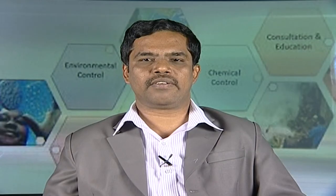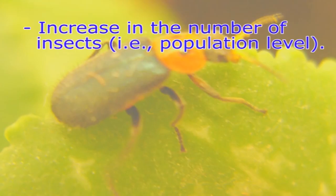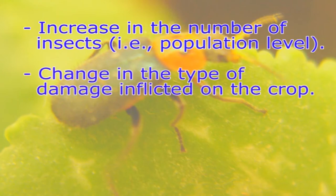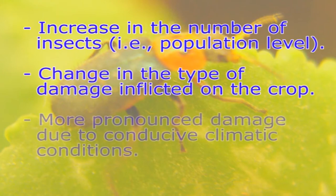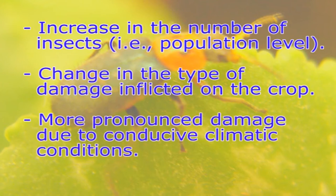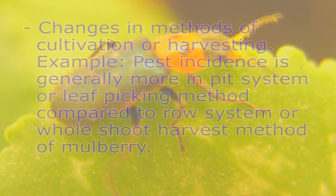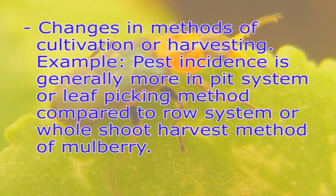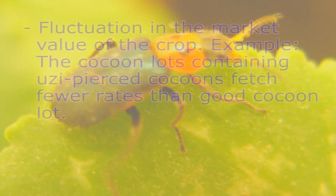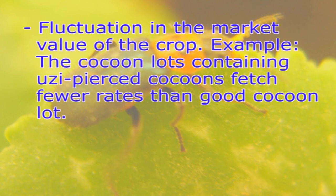The pest status of an insect species may be determined by a number of ways: increasing the number of insects (population level), change in the type of damage inflicted on the crop, more pronounced damage due to conducive climatic conditions, changes in methods of cultivation or harvesting — for example, pest incidence is generally more in the pit system or leaf picking method compared to the row system or old shoot harvest method of mulberry — and fluctuation in the market value of the crop.